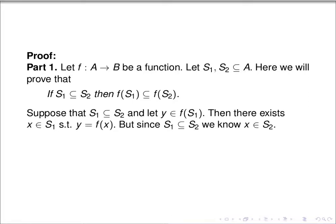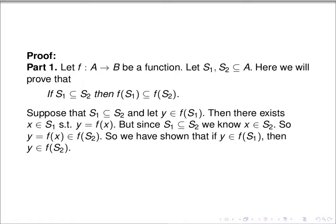But since S1 is a subset of S2 and x is in S1, we know x must also be in S2. But then if x is in S2, then y, which is f of x, is an element of the image of S2. So we've shown that if y is an element of the image of S1, then y is an element of the image of S2. That is, the image of S1 is a subset of the image of S2. That completes the proof of part one.